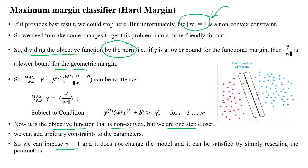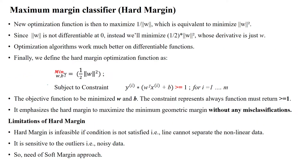When norm equals 1, the expression is equivalent to the functional margin. To simplify, we remove the constraint norm equals 1 and instead impose gamma equal to 1, since the model does not depend on the scaling of the parameters. Based on this, we make 1 divided by norm w the expression to maximize with respect to w.